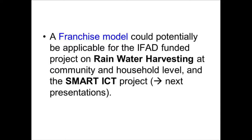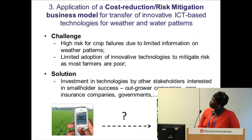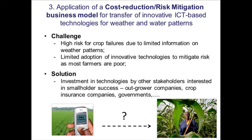This system or model is sustainable in the sense that you have different entities that have a stake in the success of others. The success of the rainwater harvesting parent company is dependent on the success of franchise X and franchise Y, and their success is dependent on how the user communities actually use the rainwater harvesting systems. You have interlinkages between these different players that ensure the sustainability of the system. This is a model that could potentially be considered for the rainwater harvesting system and even the Smart ICT project currently funded by IFAD. Lastly, there is another model — a cost reduction risk mitigation model — that can be considered.